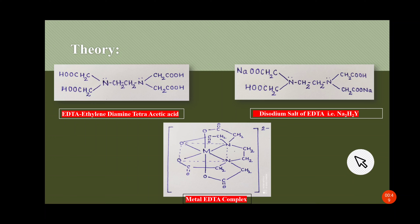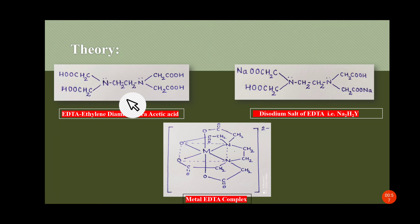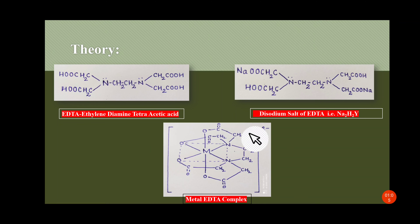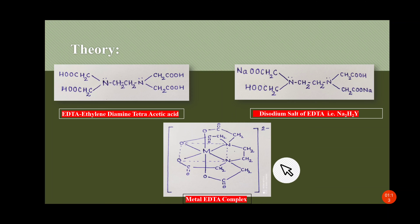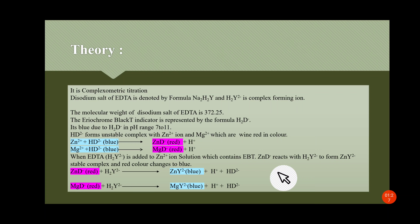EDTA means ethylene diamine tetra acetic acid. Its structure is shown here. EDTA is a hexadentate ligand. The other structure shown is the disodium salt of EDTA, written as Na2H2Y. The complex structure is a metal-EDTA complex where the metal has coordination number six. It is a complexometric titration.